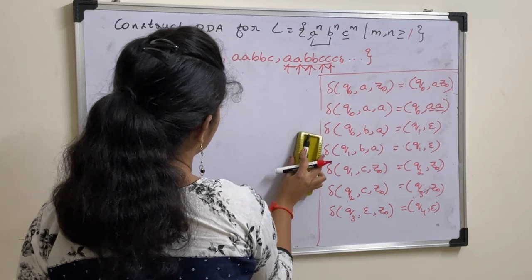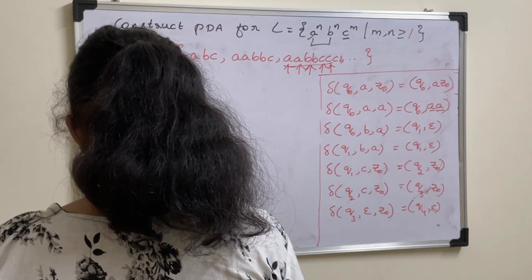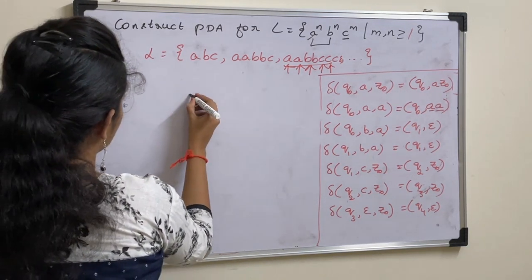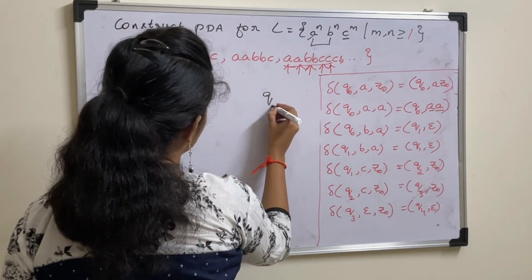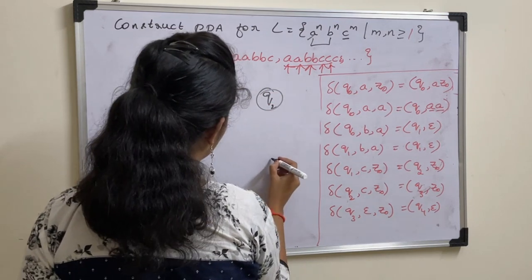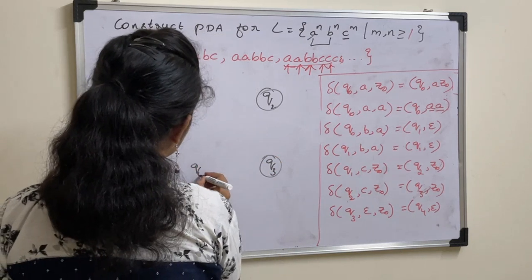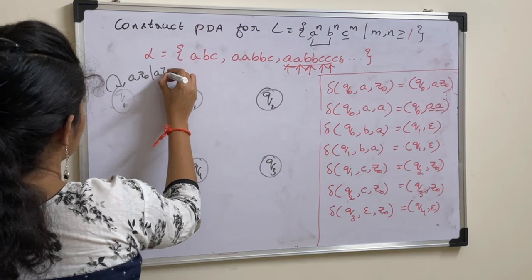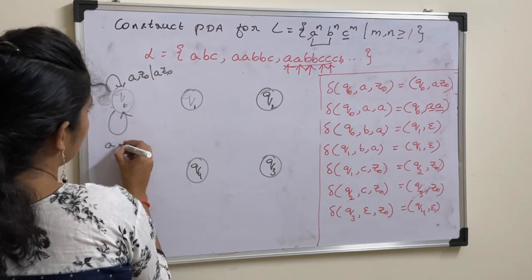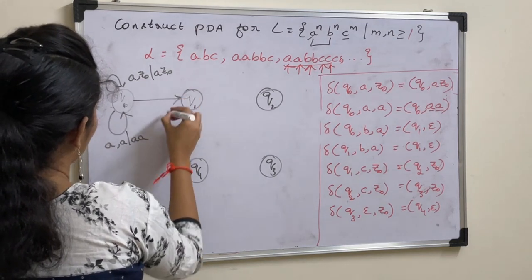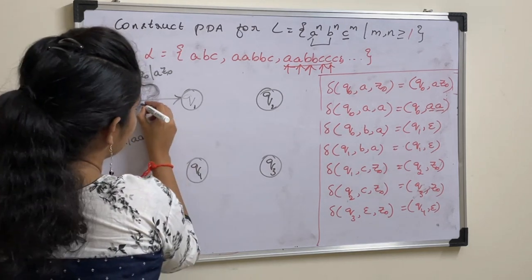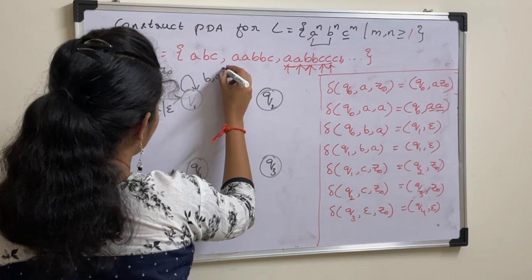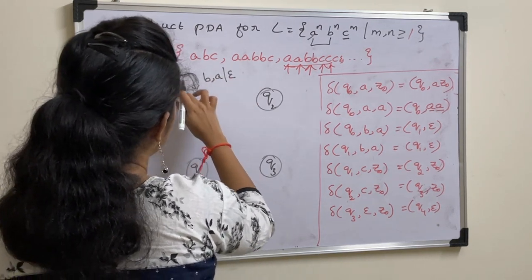Now let us see the graphical notation for these transition functions. Take states Q naught, Q1, Q2, Q3, and Q4. From Q naught: on input A with stack top Z naught, push A Z naught — remain in same state. On input A with stack top A, push A onto the stack — remain in same state. If input symbol is B and stack top is A, perform a pop operation. This is the same for any number of B's, so make it a self-loop.